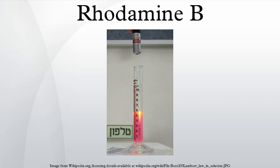Rhodamine B is a chemical compound and a dye. It is often used as a tracer dye within water to determine the rate and direction of flow and transport. Rhodamine dyes fluoresce and can thus be detected easily and inexpensively with instruments called fluorometers.